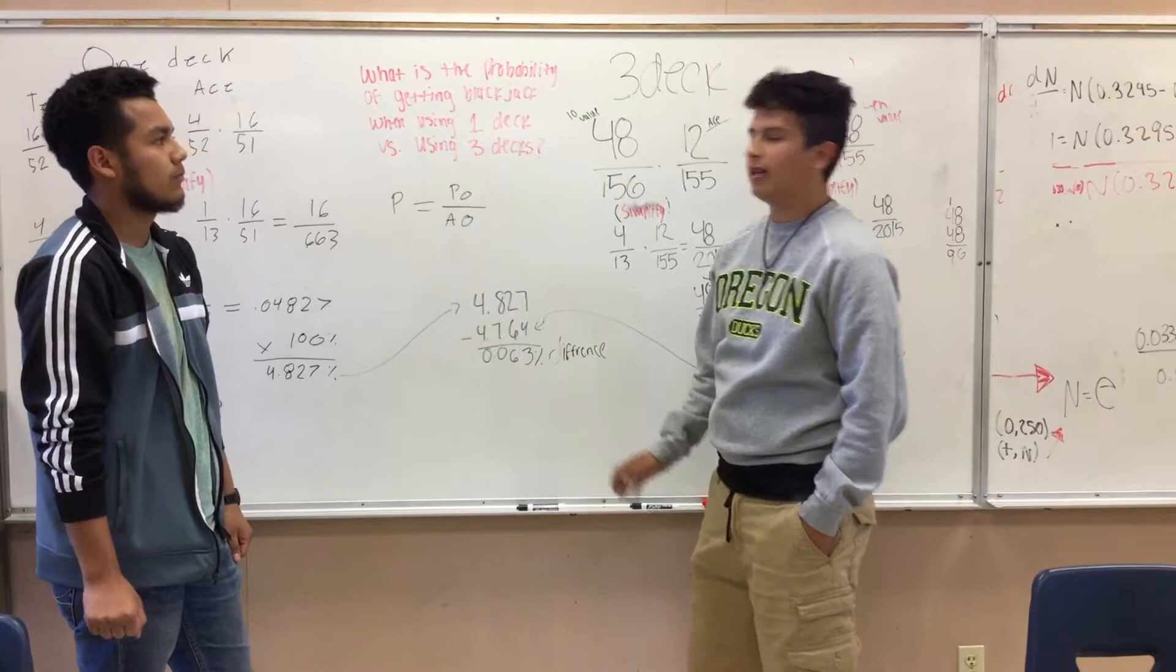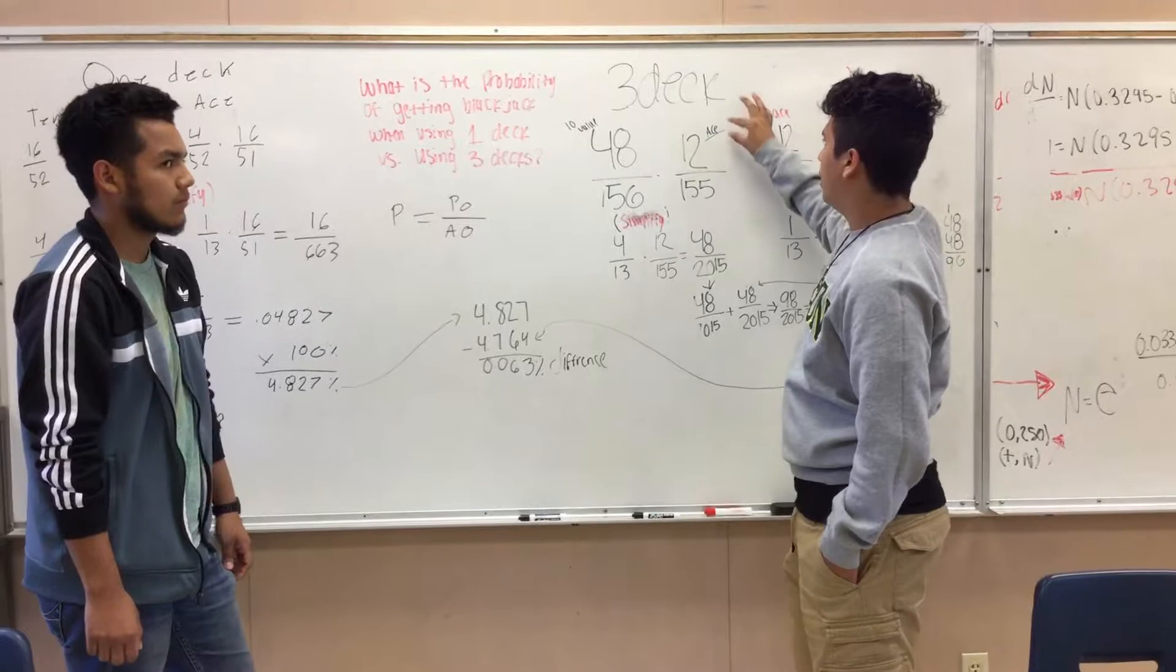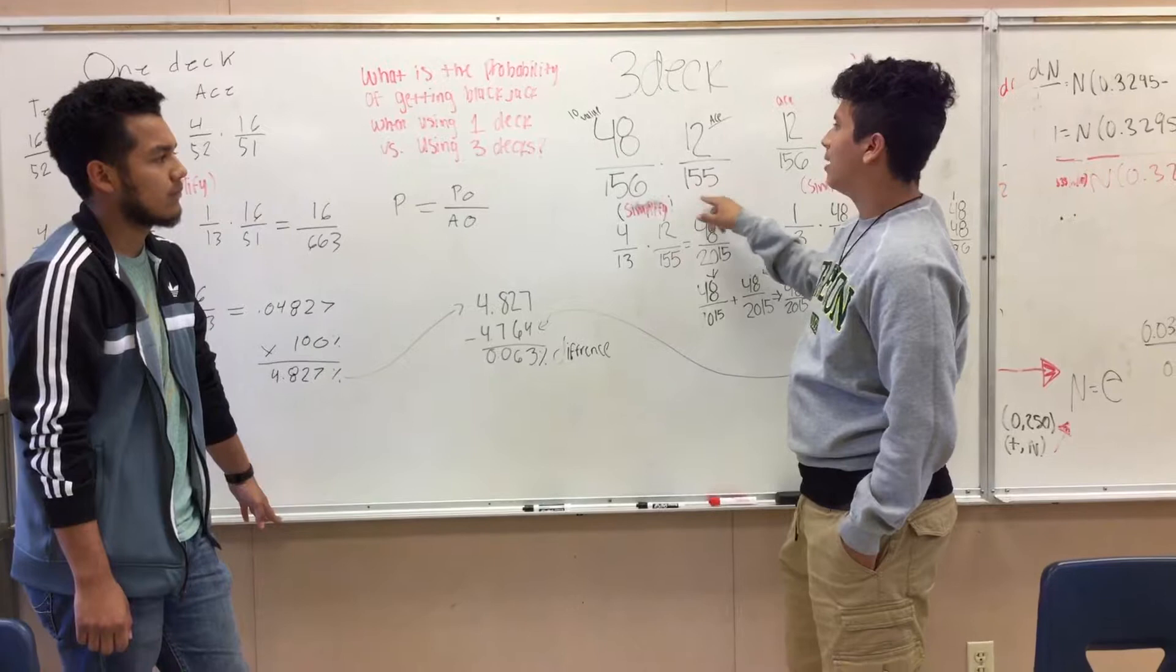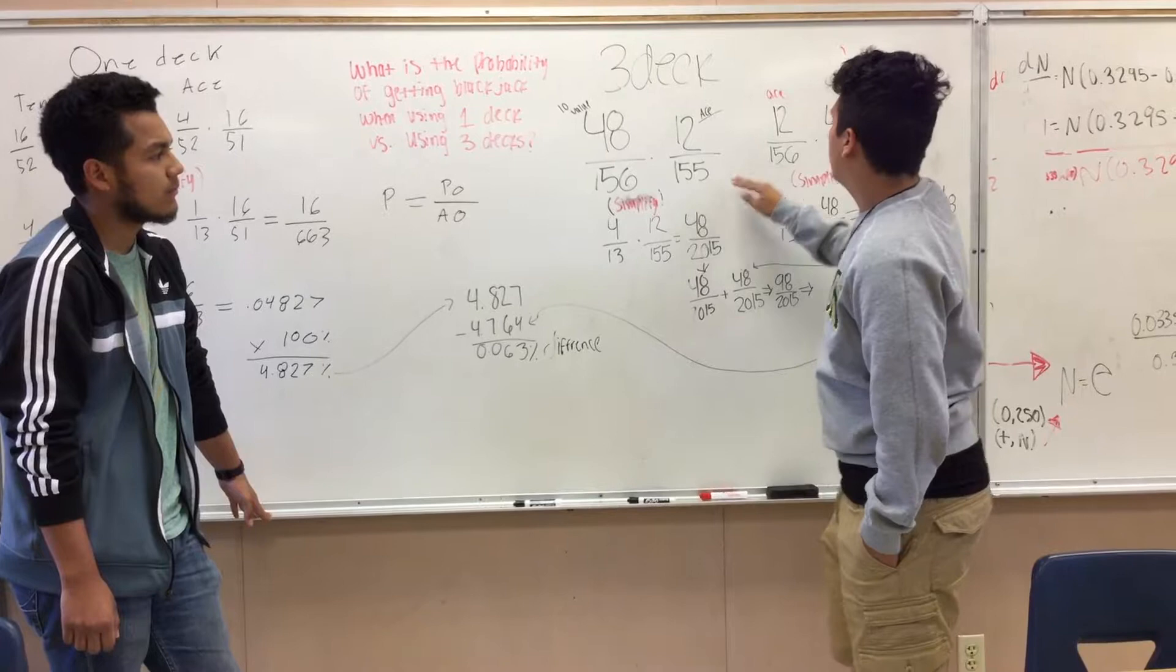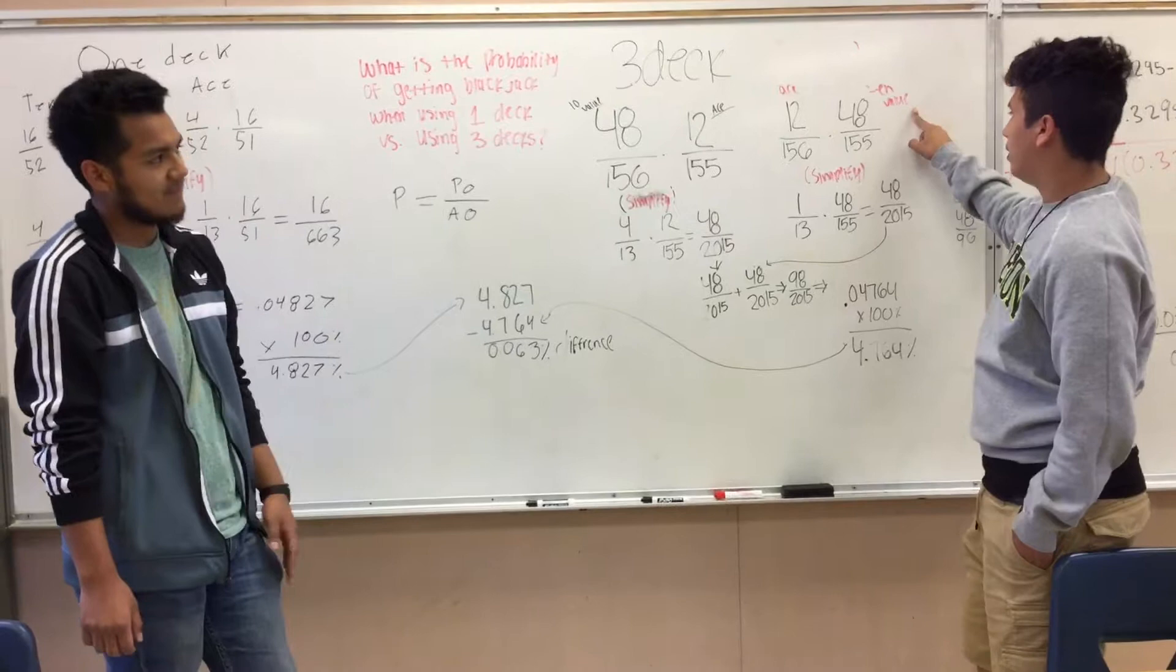So then we wanted to find out the probability of getting Blackjack when using 3 decks. We got 48 from the 10-value cards, and there's 156 cards in 3 decks. The ace - there's 12 in 3 decks - followed by 155 because a 10-value card you got first. And then we did it the other way, which was getting the ace first over the number of cards and the 10-value cards over 155.